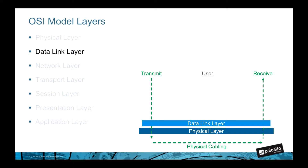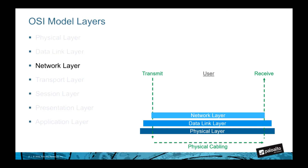Switches and bridges forward traffic at layer two using MAC addresses. They take the bits and package them into frames with a layer two header that allows layer two devices to pass the traffic. The network layer, or layer three, is responsible for routing packets across networks.